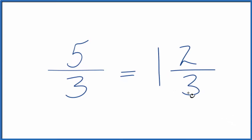We can check that: 1 times 3, that's 3 plus 2, that gives us the 5. Then we have the 3 as the denominator.